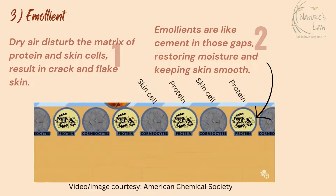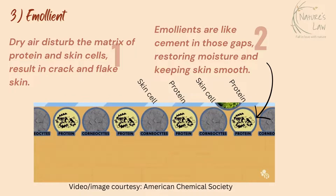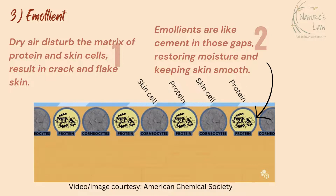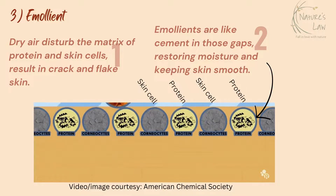The matrix of skin proteins and skin cells makes a smooth layer of skin. Dry air pulls moisture from the skin and disturbs this matrix, which results in cracked and flaky skin. Emollient acts like cement for this broken matrix and repairs the damage, helping to make skin smooth.